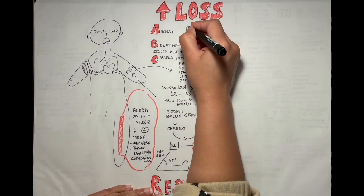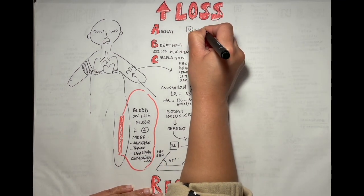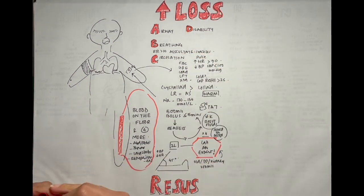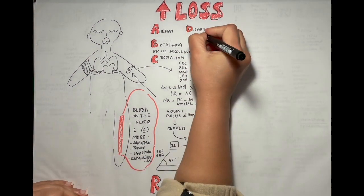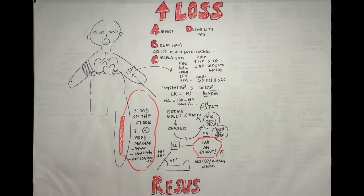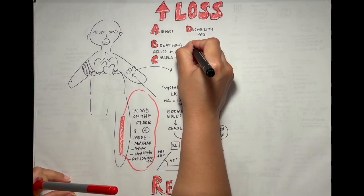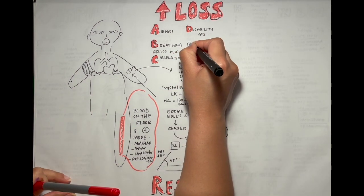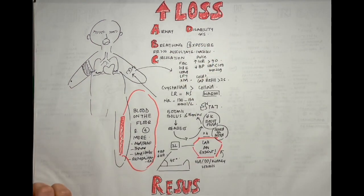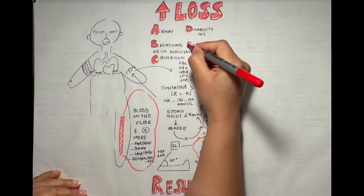For completion, let's talk about D and E. Disability can be monitored through the GCS — if the patient is confused, that might give a clue into decreased perfusion to the brain, which could be due to fluid loss. Exposure will help you identify any open wounds or stomas from where they might be losing fluid.